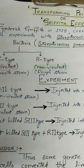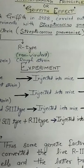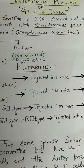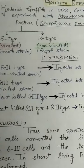Before we talk about the experiment and observations, let's see what exactly he used. He used Streptococcus pneumoniae and mice for his experiment. This Streptococcus pneumoniae is a bacterium that causes pneumonia in mammals.